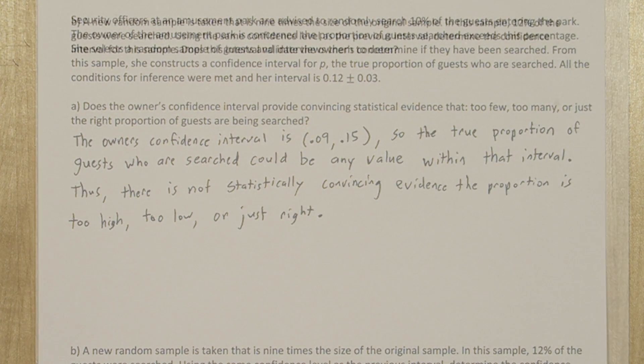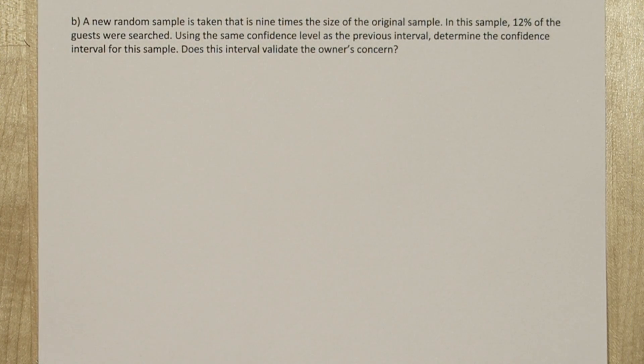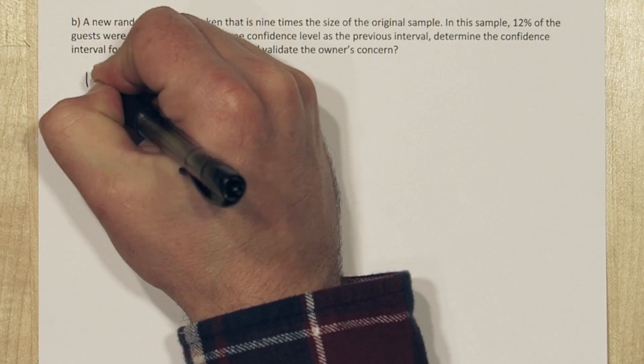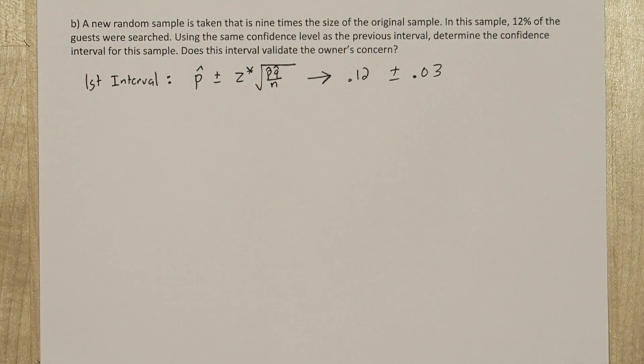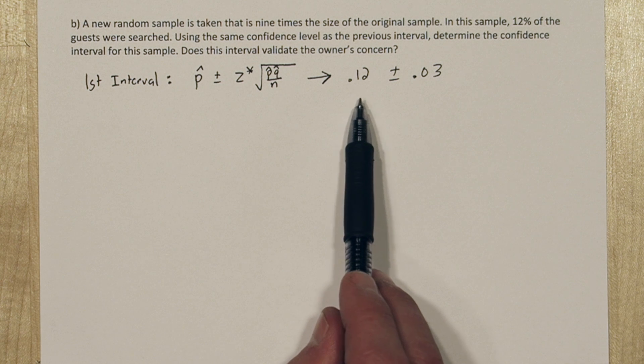Any confidence interval for proportion is constructed using p-hat plus or minus a margin of error. For the first interval, our p-hat was 0.12, and our margin of error was 0.03.